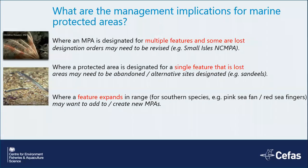Moving on to the management implications for protected areas: where some MPAs are designated for multiple features and some of those might be lost, we might need to think about revising some of those designations. An example in the UK is the Small Isles Nature Conservation Marine Protected Area in Scotland, which is designated for nine features — a mix of habitats and species including horse mussel beds, northern feather star aggregations, and mixed substrates. These features are expected to respond quite differently to climate change, so the makeup of that MPA and its mix of designations might need to change over time.